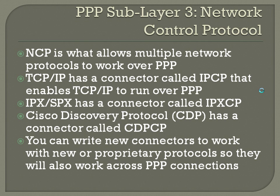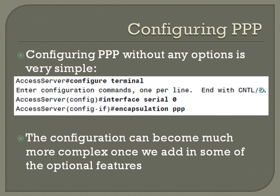Configuring PPP without any options is very simple: it's effectively config T, jump into the interface, and encapsulation PPP — you're done. The configuration can become a lot more complex once you start adding some of those optional features discussed in the sub-layers.